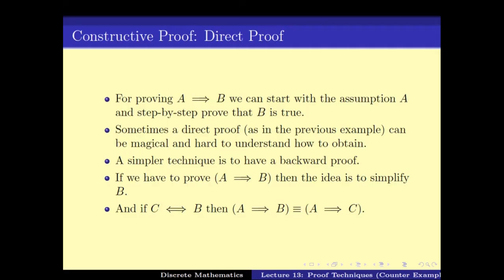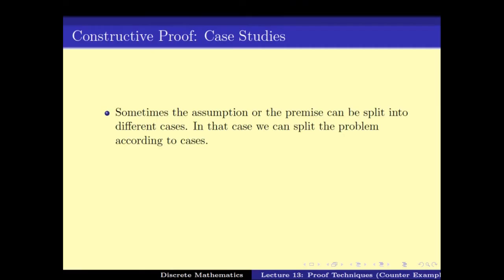There was another proof technique in the constructive proof category, which is called case studies. The idea is that sometimes the assumptions or premise can be split into defined cases, and in that case we can split the problem accordingly. If A can be written as C or D, then proving A implies B is the same as proving C implies B and D implies B. It is important to note that how to split A into C or D requires some art and understanding of the problem. One would like to split in such a way that proving C implies B and D implies B becomes easier.